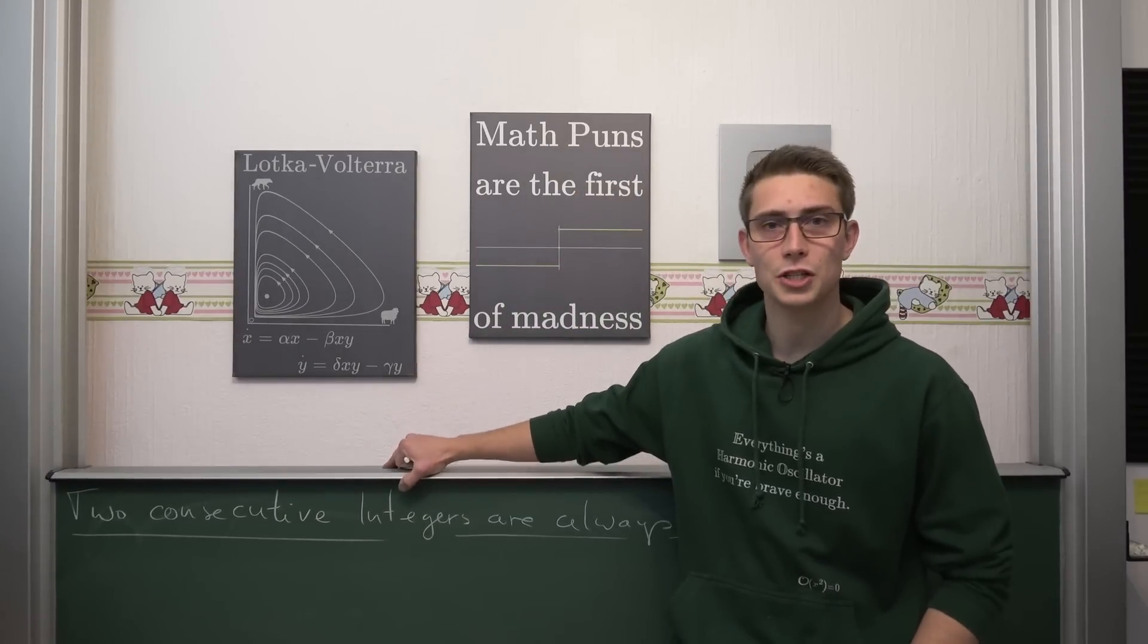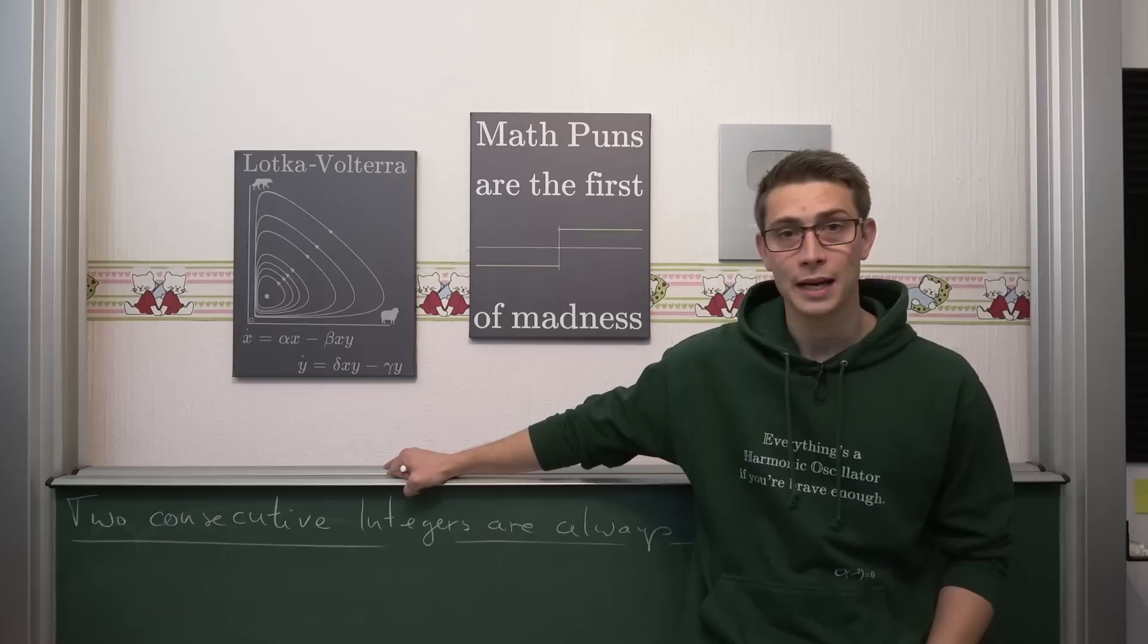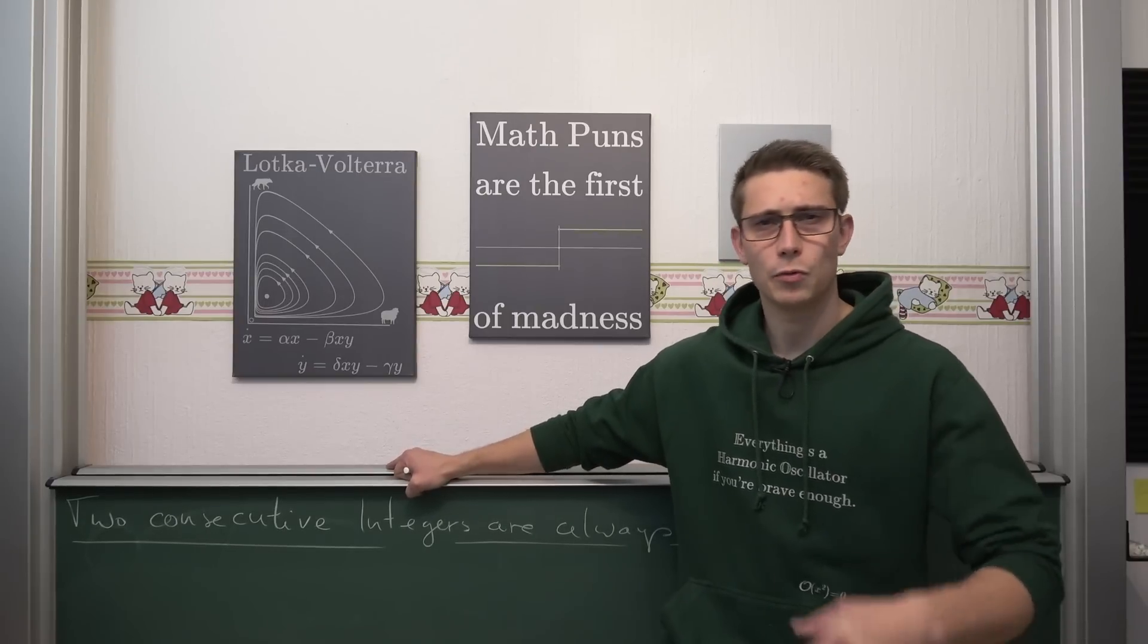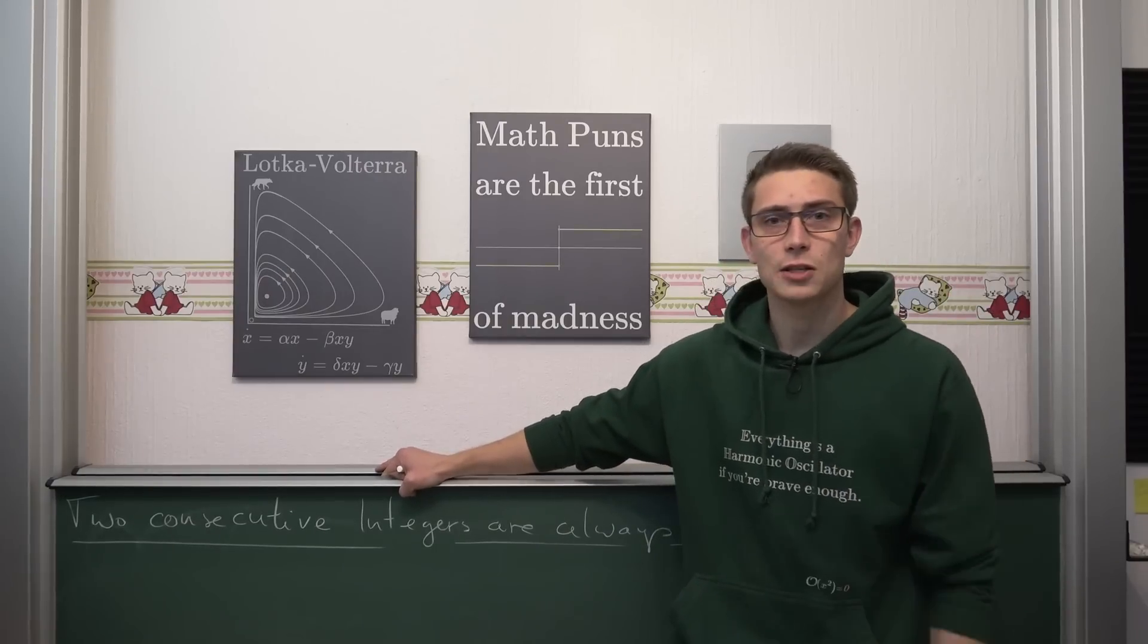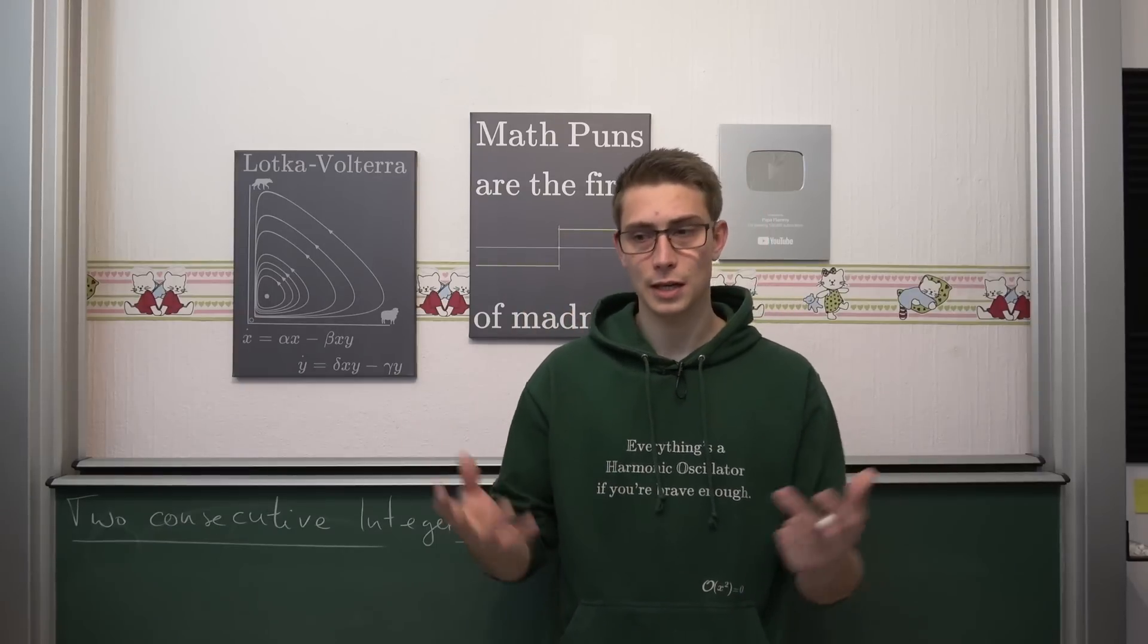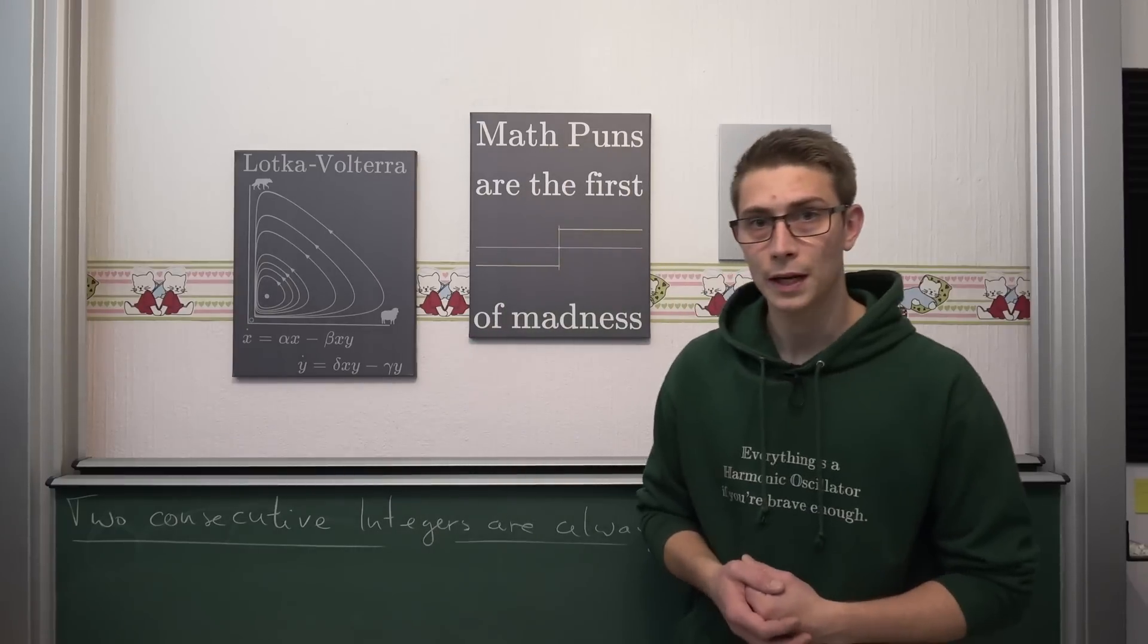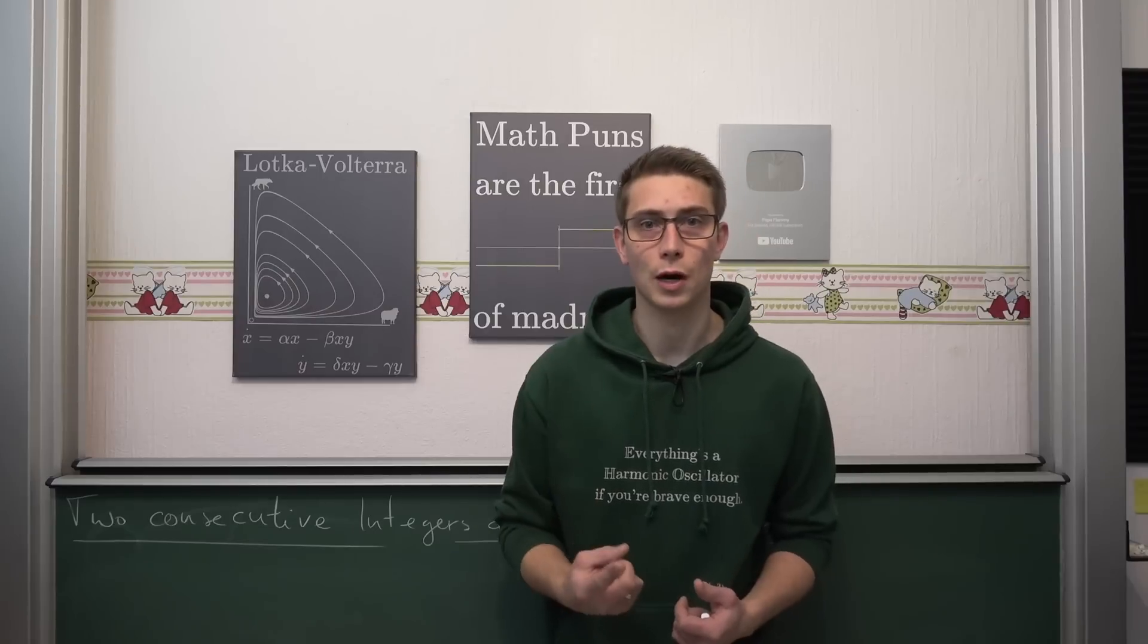So recently I was teaching rational numbers and fractions to my students in 6th grade once again. And there I was pulling back to elementary number theory a tiny little bit when dealing with when is a fraction completely reduced. And then I told them that if they have two consecutive integers in the numerator and denominator, then the fraction is going to be irreducible. What this means is that two consecutive integers are always co-prime.